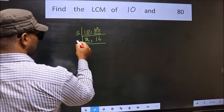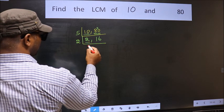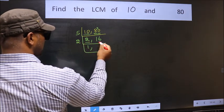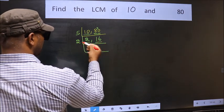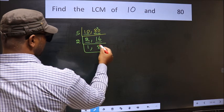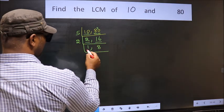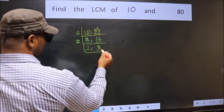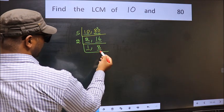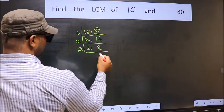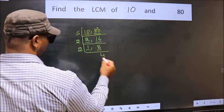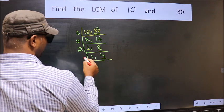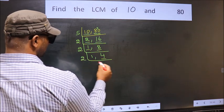Now here we have 2. 2 is a prime number, so 2 once 2. The other number is 16. When do we get 16 in the 2 table? 2 eights are 16. Now we got 1 here, so focus on the other number 8. 8 is 2 fours. Now we have 4: 4 is 2 twos.